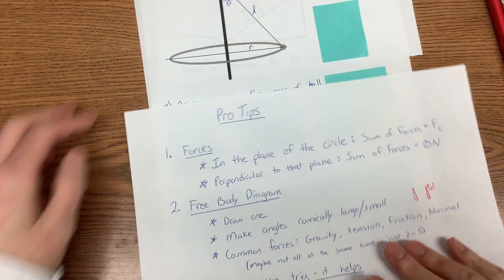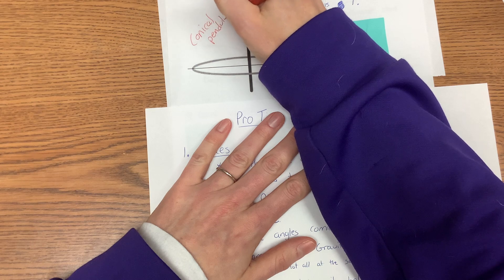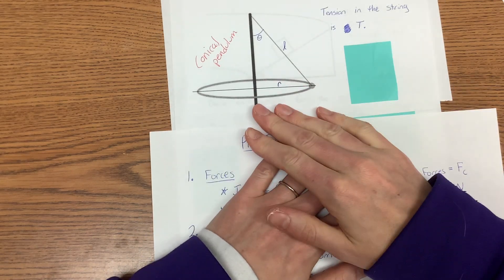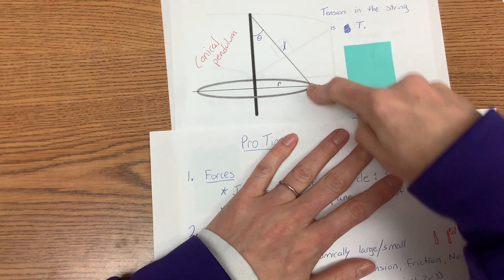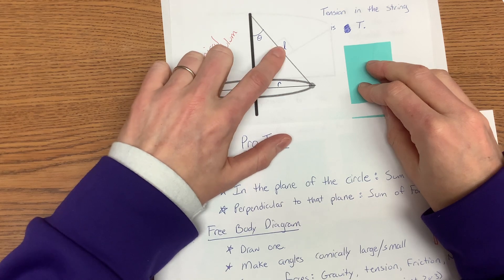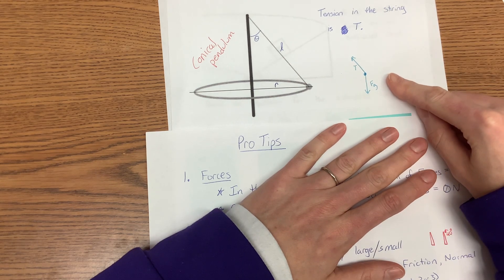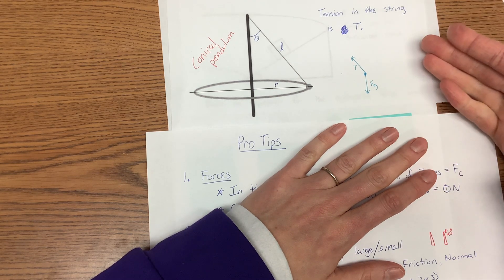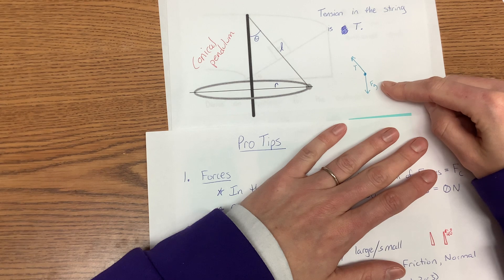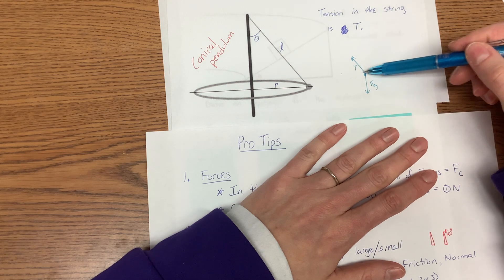Now we're going to do some questions. The first one involves what's called a conical pendulum — I don't think they'll ever refer to it as that in a problem, so knowing its name doesn't really matter. The tension in the string acts along the string, the ball is being swirled around in a circle, and there's a stick holding it up. They'll give you an angle, a length, or a radius — probably not all of them. Here's the tension, and here's gravity. Tension always follows the string.